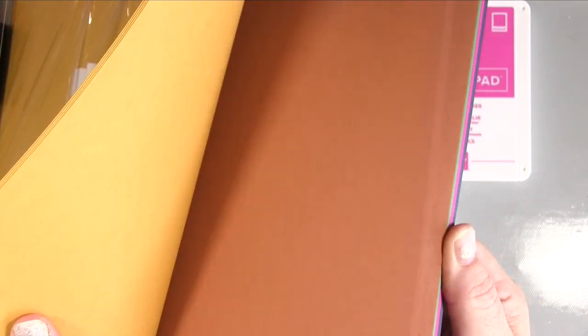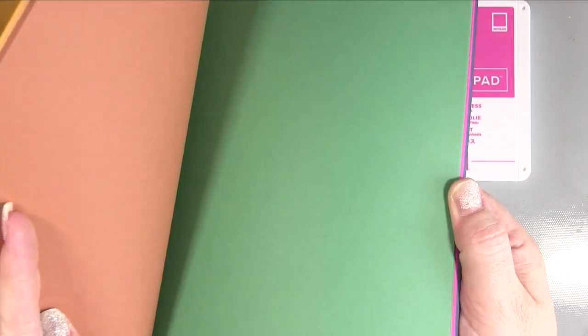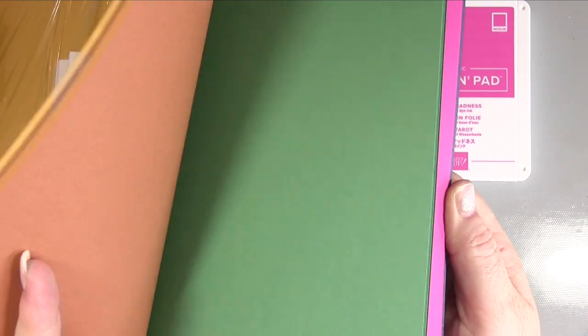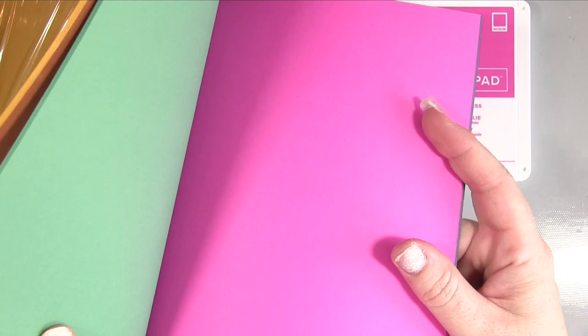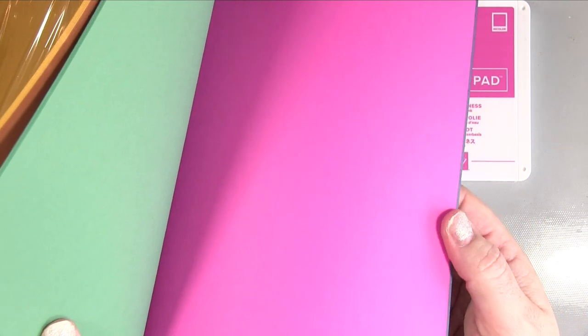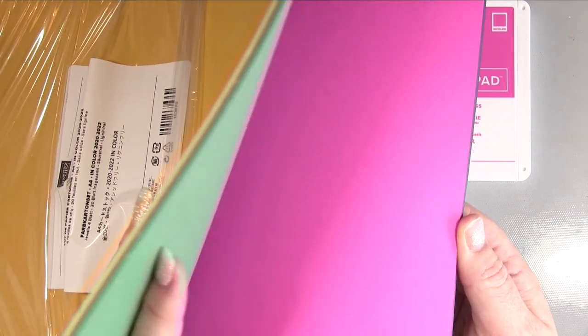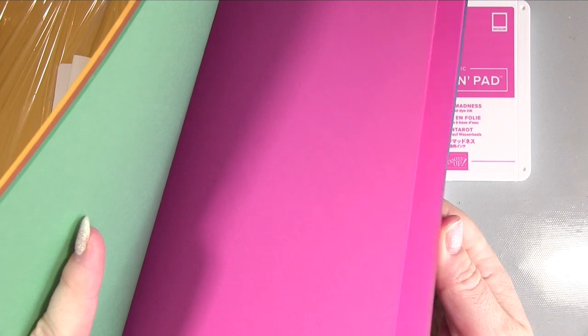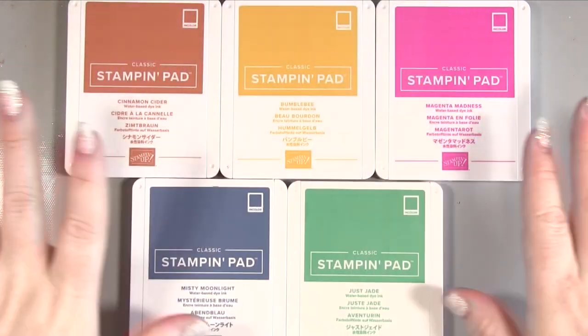So you've got that lovely bumblebee, the cinnamon cider, the Just Jade which looks stunning I really like the look of that and this magenta madness looks a much blueier pink than the other colours and a much brighter pink than the other pinks that I've seen so far from stamping up and then we've got this blue here which is called Misty Moonlight. So that's the new colours.